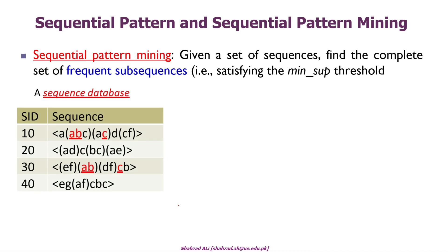We have a sequence database containing four customer shopping sequences with sequence IDs 10, 20, 30, and 40. Each sequence ID contains a sequence — for example, sequence ID 10 contains a, abc, ac, d, and cf as its sequence. Other sequence IDs contain different sequences in the transaction sequence database.